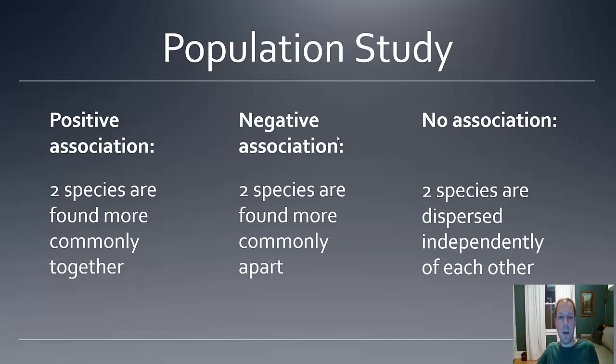A negative association, on the other hand, is going to be when you can determine that two species are found more commonly apart, meaning that when you find one, you don't find the other. And so it's more likely that one is maybe chasing away the other, showing that in some way these two species might harm or crowd out or compete in some way with each other for space.